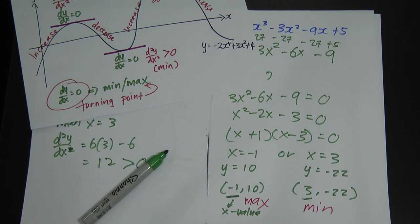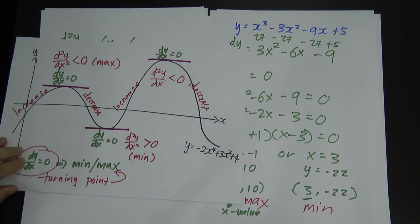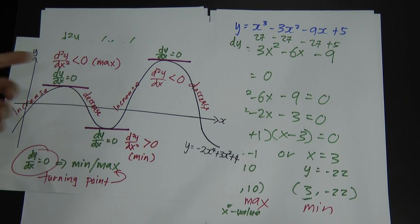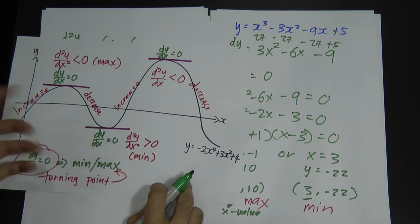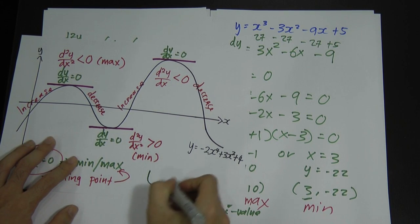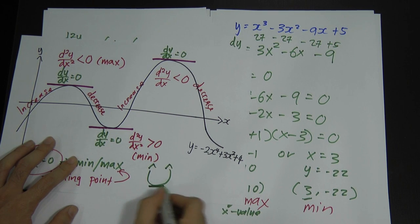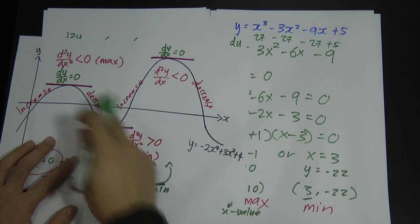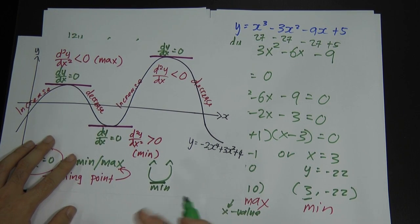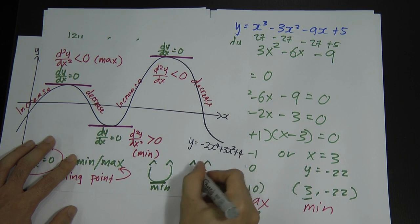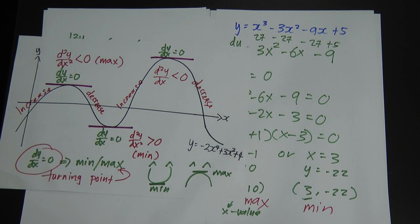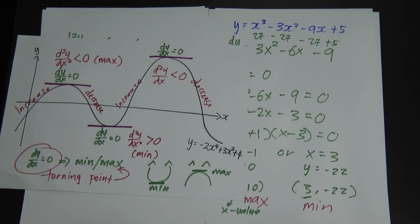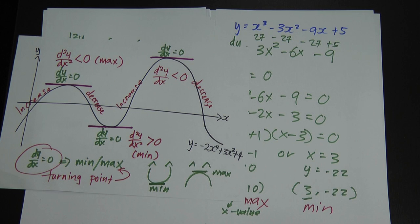Here's a memory trick I use: if you differentiate a second time and get a positive value, think of positive energy — you'll be very happy, you'll smile. A smile shape gives you a minimum point. If you get a negative value, you'll feel very sad — a sad face gives you a maximum point. This is how I remember which second derivative result corresponds to maximum and which to minimum.